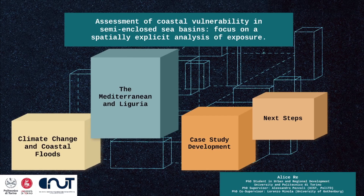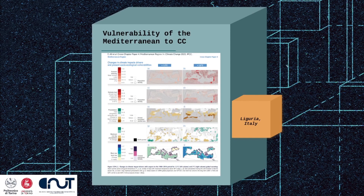The Mediterranean Basin has been identified by the IPCC as one of the most vulnerable areas to climate change. Because of a combination of local characteristics pertaining to geomorphology, climate, and population density, the Italian region Liguria is an interesting candidate for a case study.